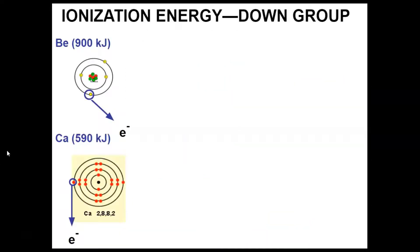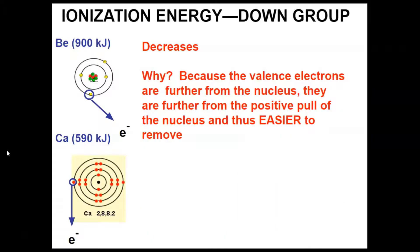As I go down a group, the ionization energy decreases. So it's easier to take an electron from calcium than from beryllium — you can see that with the numbers. If I have something I'm trying to keep away from someone, I'm going to hold it close to myself. So as the valence electrons get further from the nucleus, they're further from the positive pull of the nucleus, and so it's a lot easier to remove them.